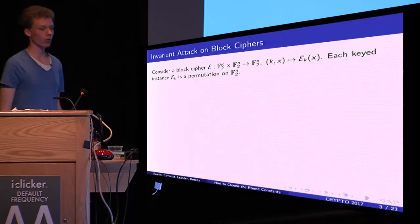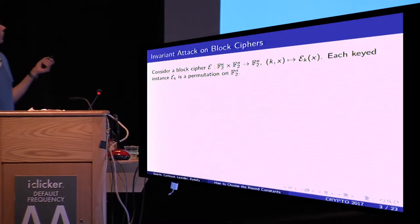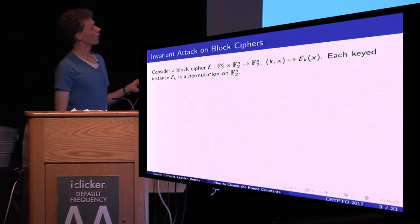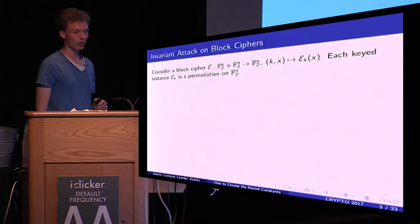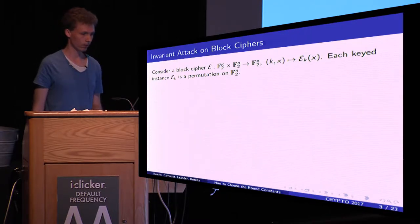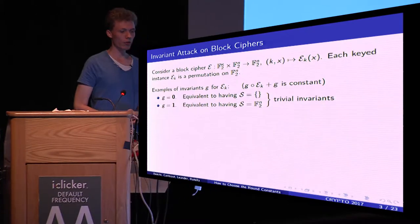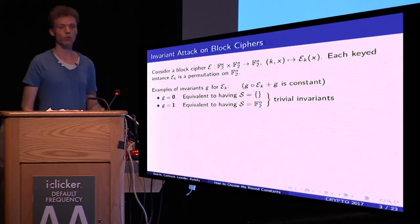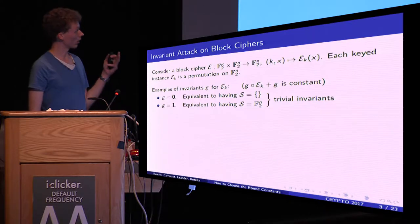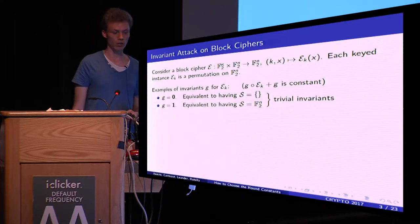Since we talk about block ciphers, we want to explain what invariant attacks on block ciphers are. If we consider a cipher E on n bits, then each keyed instance E_K must be a permutation on F2 to the n, so we are exactly in the case we just defined. For examples: the empty set is always a trivial invariant set, corresponding to the all-zero function G, and the whole F2 to the n corresponds to the all-one constant function G. We call these trivial invariants.